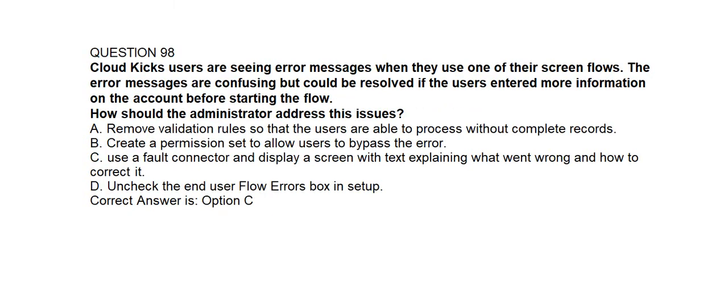Question number ninety-eight. CloudKix users are seeing error messages when they use one of their screen flows. The error messages are confusing but could be resolved if the user entered more information on the account before starting the flow. How should the administrator address these issues? Option A: Remove validation rules so users can process without complete records. Option B: Create a permission set to allow users to bypass the error. Option C: Use a fault connector and display a screen with text explaining what went wrong and how to correct it. Option D: Uncheck the end user flow errors box in setup. Correct answer is Option C.